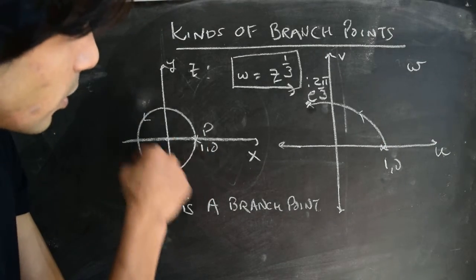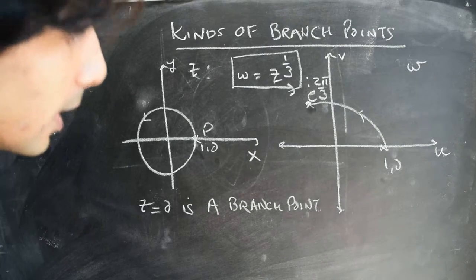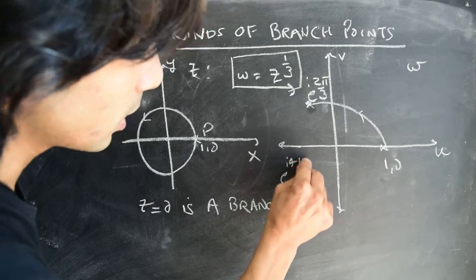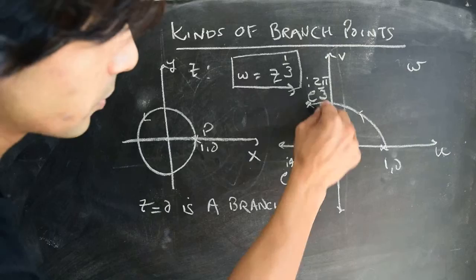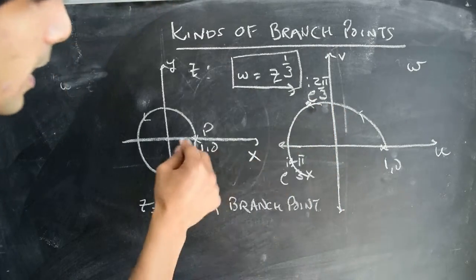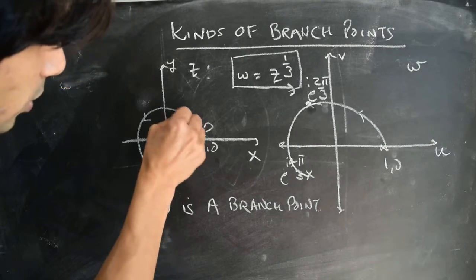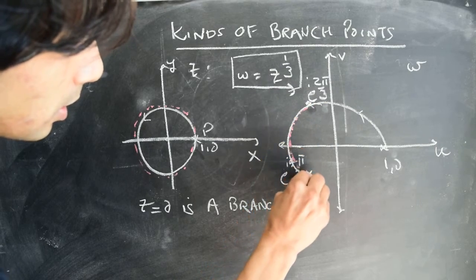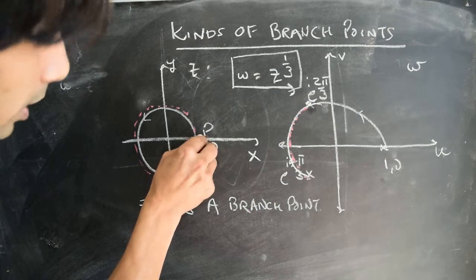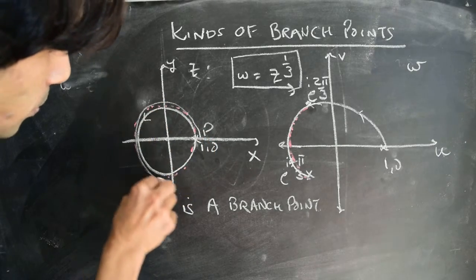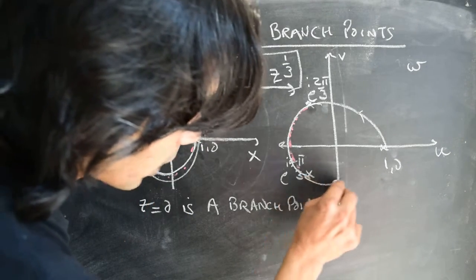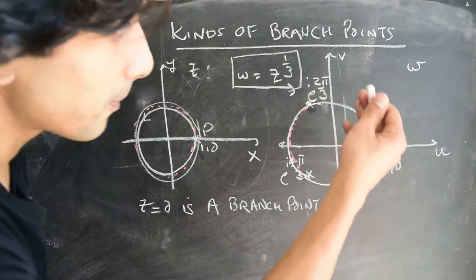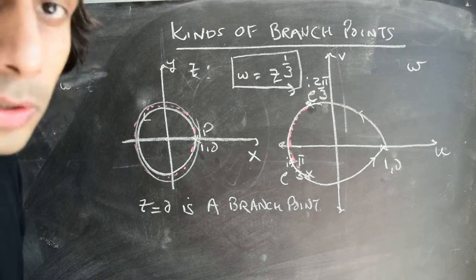Why three? If you make one rotation, you end up at e to the power of i·2π/3. You make another rotation, you end up at e to the power of i·4π/3. These are all vertices of the equilateral triangle — we have talked about this before. If you make one more rotation, you traverse that path. And if you make a third rotation in the z-plane, it is then that you actually end up back at the point (1,0) in the w-plane. So it takes three rotations in the z-plane to come back to (1,0), which is where you started off.